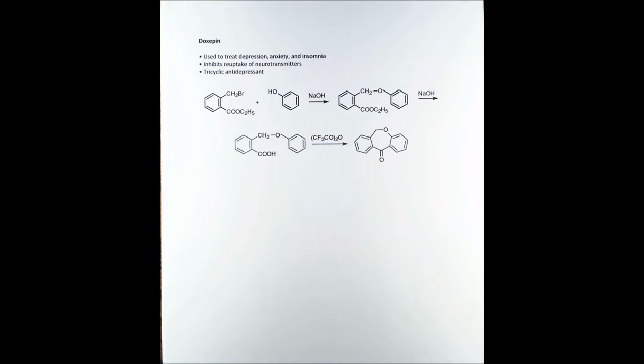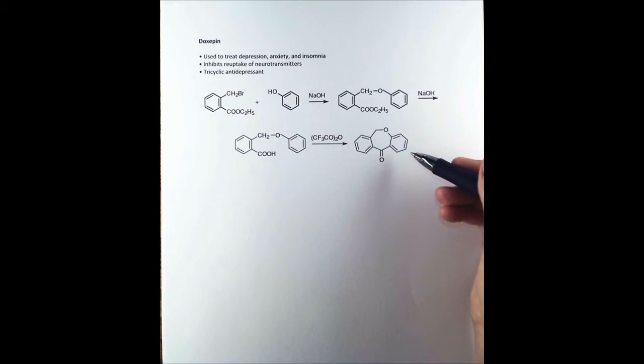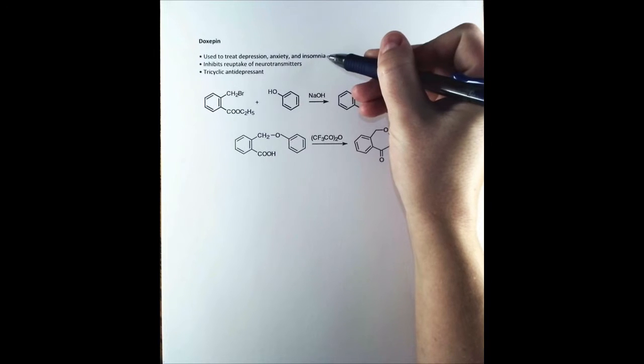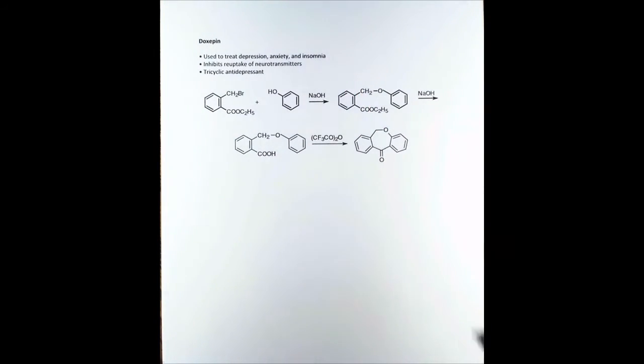We'll start by looking at the synthesis of doxepin. This drug is used to treat depression, anxiety, and insomnia and it does so by inhibiting the reuptake of neurotransmitters. Briefly, in the brain neurotransmitters are released, they do their job in the nerve synapse, and then they're taken back up, but in some people this process doesn't work properly and so this inhibits that reuptake. Doxepin belongs to the class of tricyclic antidepressants and you can see the three rings in its structure.